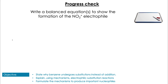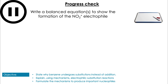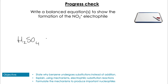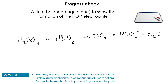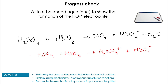Next: write an equation to show the production of the NO2+ electrophile. For this one, you could have given two answers. You could have given the overall reaction of sulfuric acid with nitric acid to form NO2+, HSO4-, and H2O. Or you could have given it in two equations: the first showing the reaction of H2SO4 with HNO3 to form H2NO3+ and HSO4-, and the second equation showing the breakdown of H2NO3+ going to NO2+ and water.